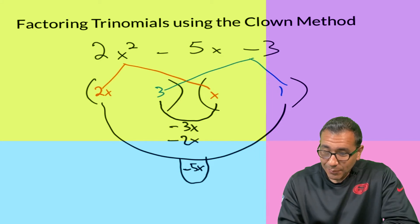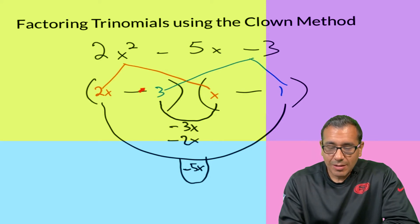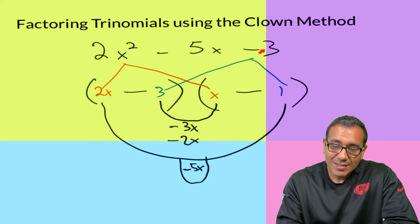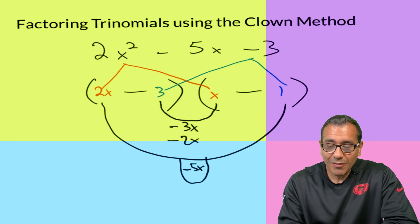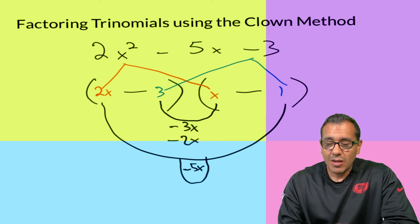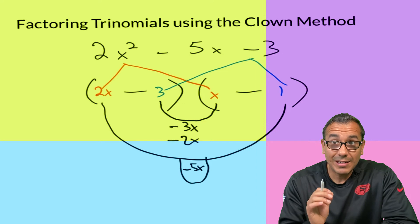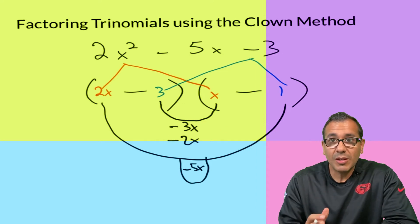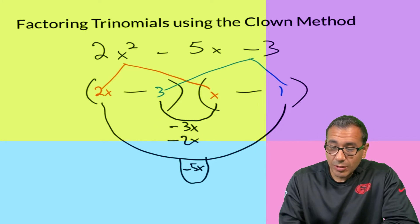To get negative 5x, both products would have to be negative. But if both signs are negative, then negative 3 times negative 1 gives positive 3, not negative 3 — so that doesn't work. The signs would have to be different, and with different signs there's no way to get negative 5x. So right away this combination fails, and it only takes seconds to check.